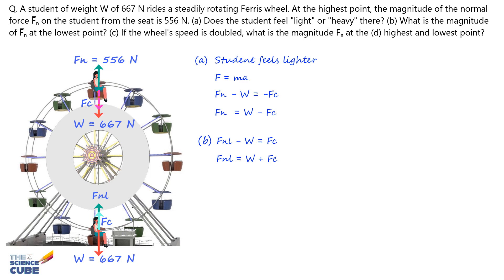Also, you must note that Fc does not change since the speed of rotation is constant, which is stated in the problem. From part A, we can calculate Fc as Fc equals W minus Fn, which is 667 Newtons minus 556 Newtons or 111 Newtons.